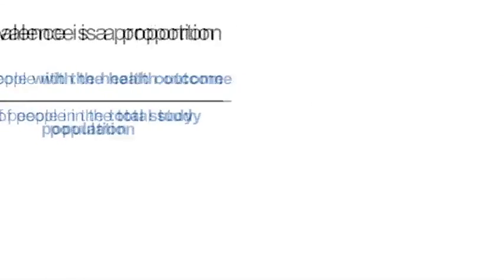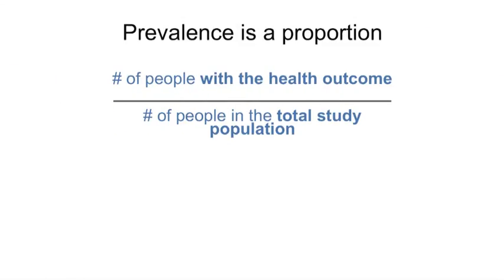Prevalence is a proportion. The numerator is the number of people with the disease or health outcome, and the denominator is the number of people in the total study population. Note that people with the disease are also counted in the denominator.